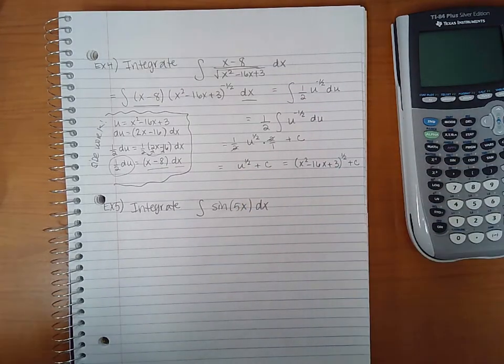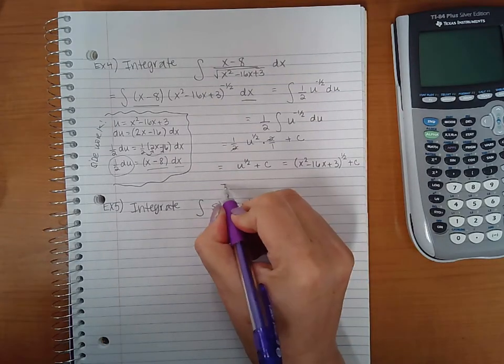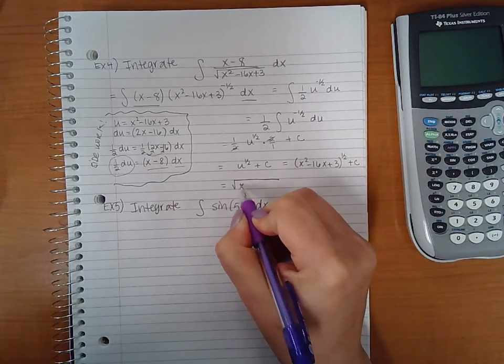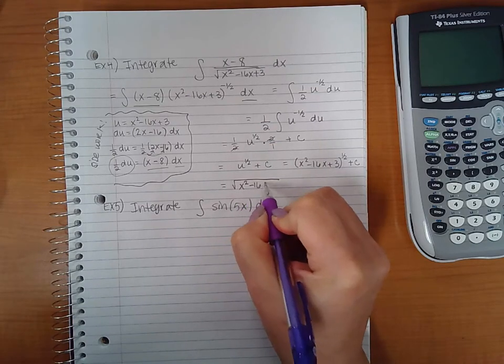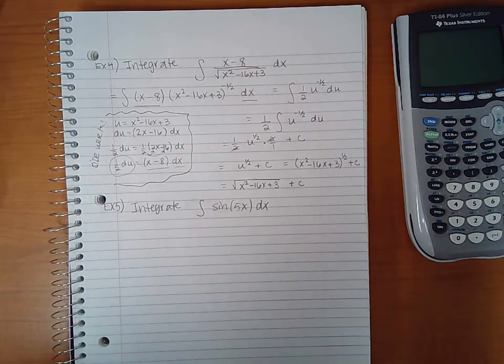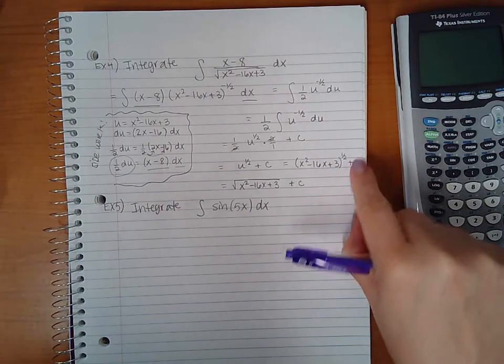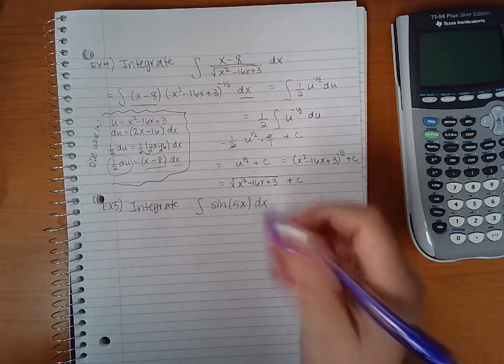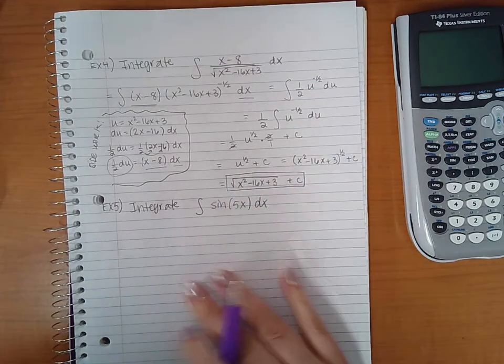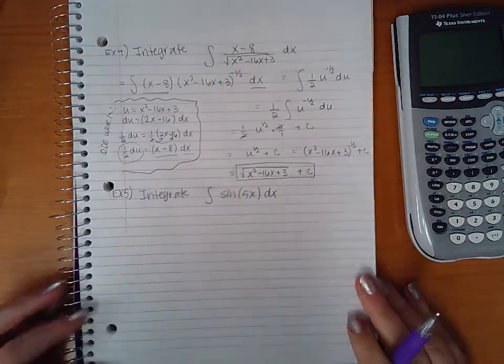I do have to back substitute what u was. U was x squared minus 16x plus 3, so I'll still have my one half power and plus C. If I wanted to write it formally, I would put this inside of a radical, then my plus C off to the side. Plus C does not have a one half exponent, so it should not be inside the radical. This would be my final answer.